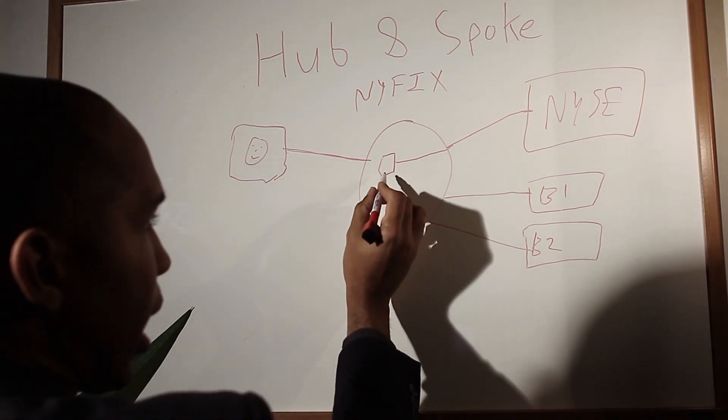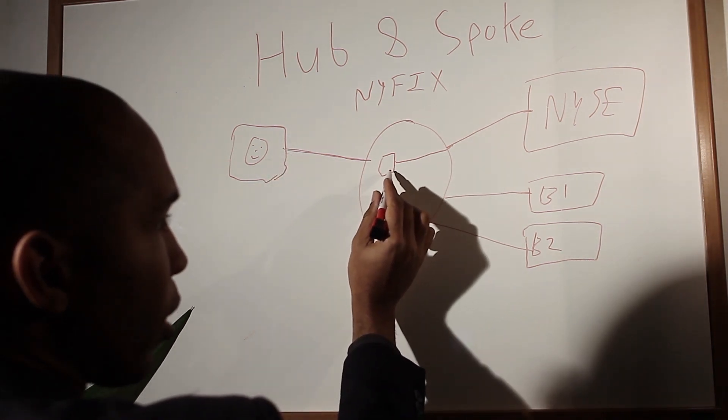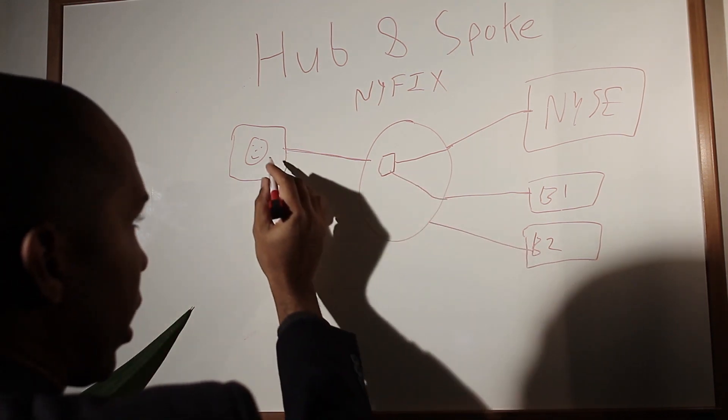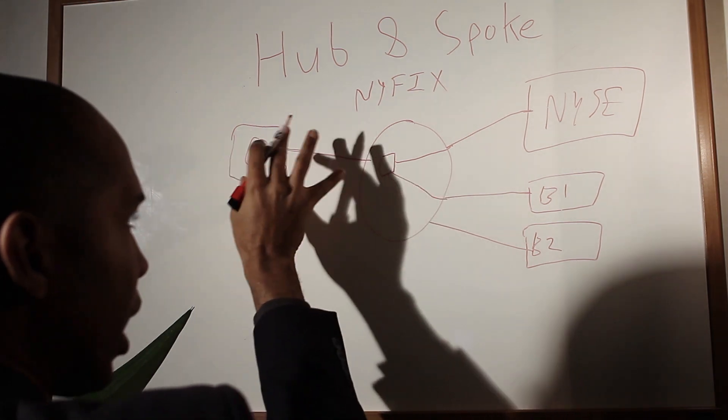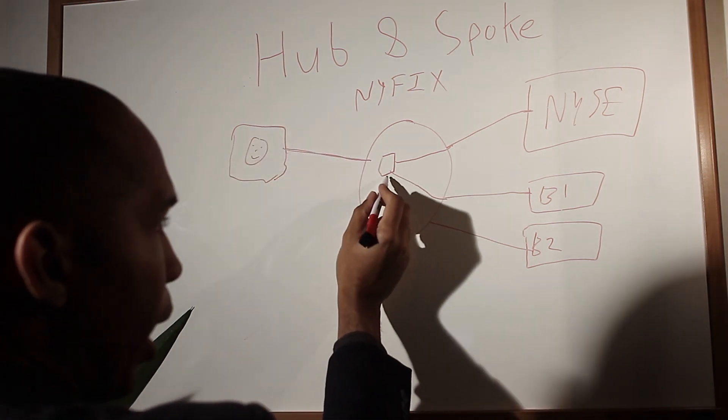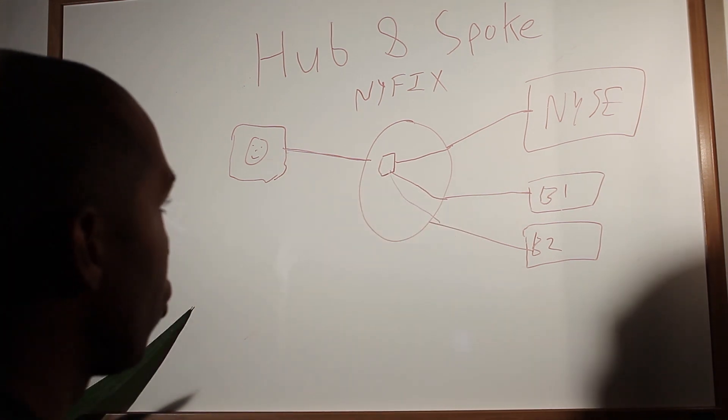If I send different tags, I can now say I want to send this order to broker one. Okay, so it goes to broker one. I can say I want to send this to broker two. So within the FIX message, I indicate where I want this to go to. So it goes in here, and it can get routed to broker two.